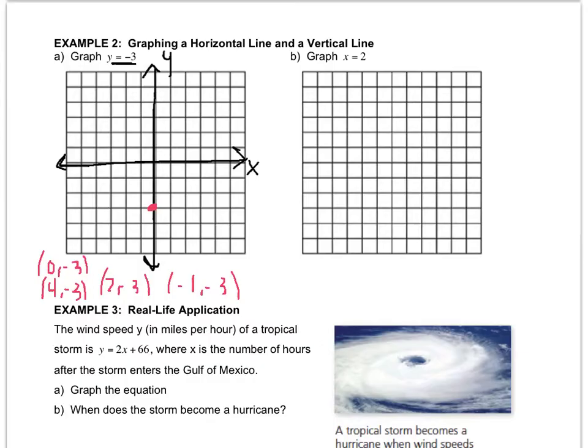0, negative 3. 4, negative 3. Negative 1, negative 3. 2, negative 3. And you see they are going through that y-axis hitting at a horizontal line. Y equals negative 3. So there's no table of values necessary for one of these. You just have to be able to spot them. And they're much quicker to graph.